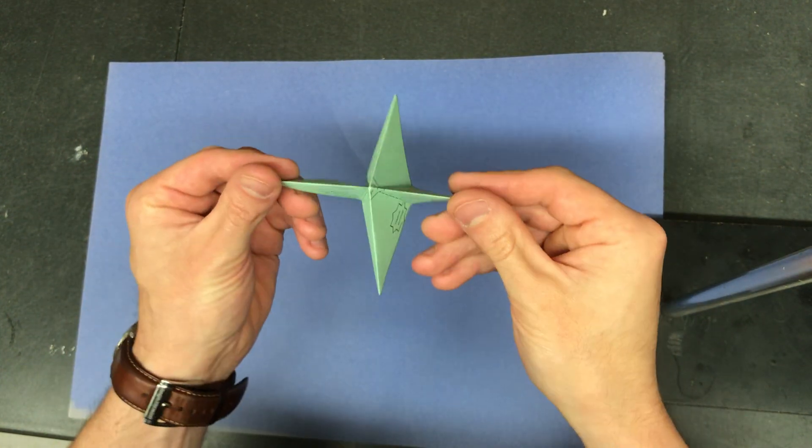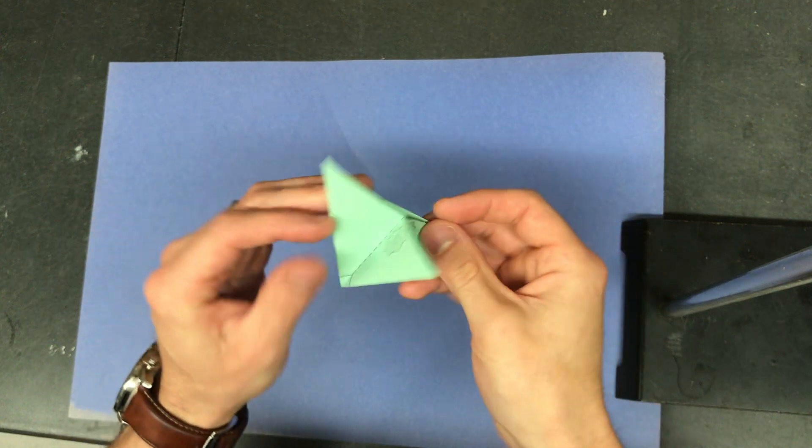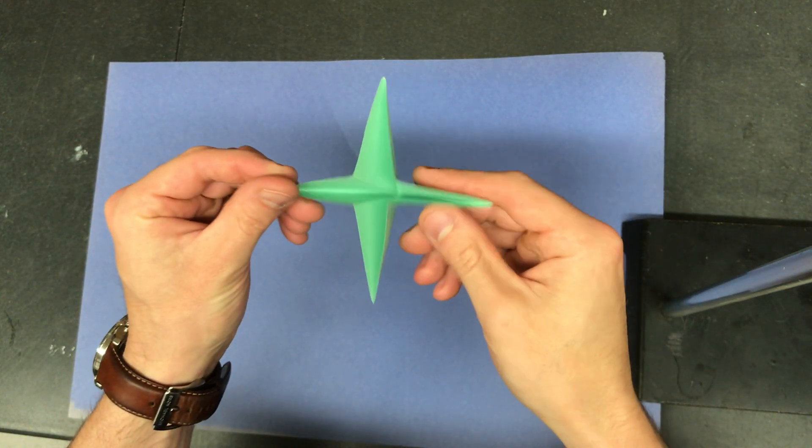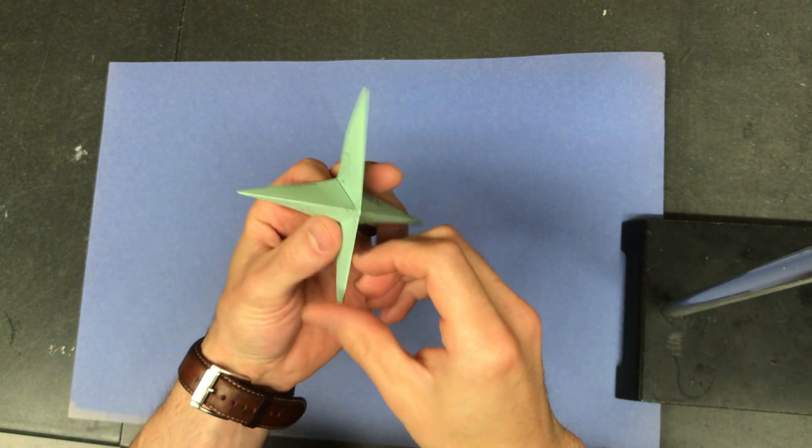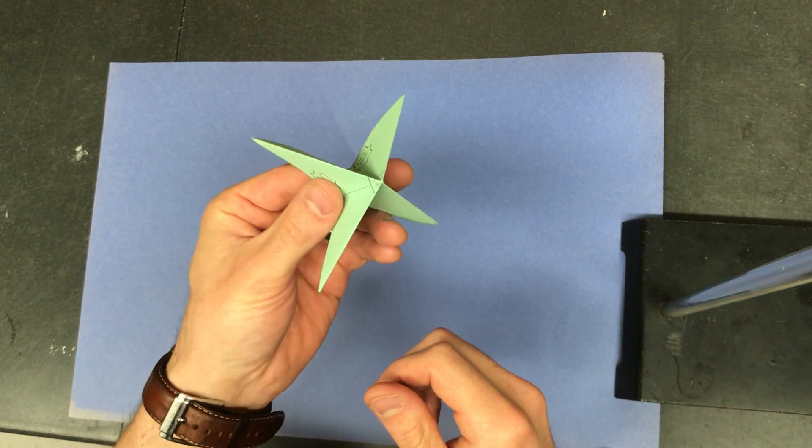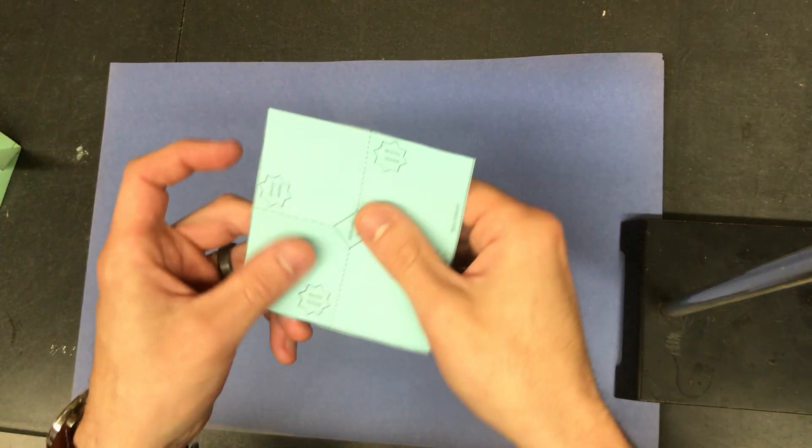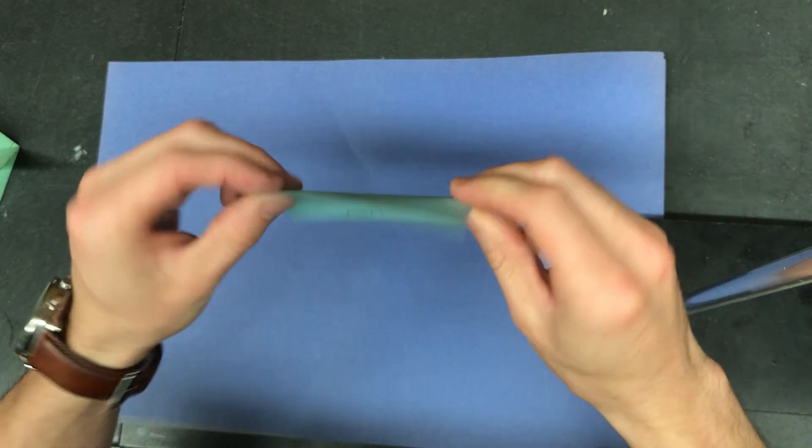Okay, so what you're making today is a subunit of hemoglobin. Four subunits make up hemoglobin, and this is one subunit. So this is what you're making four times, and you start out with a square of paper.